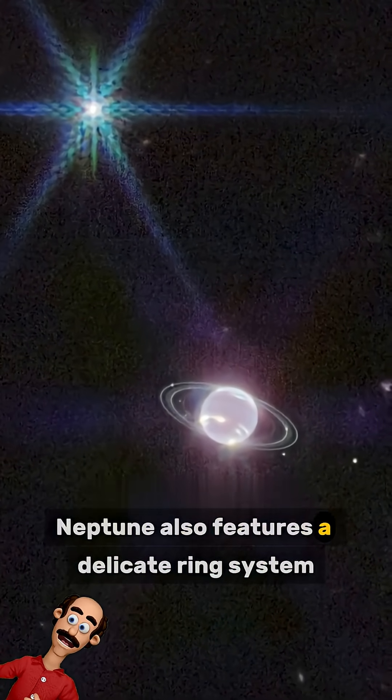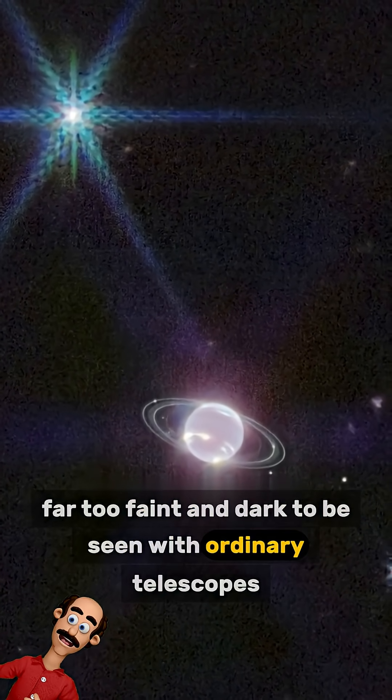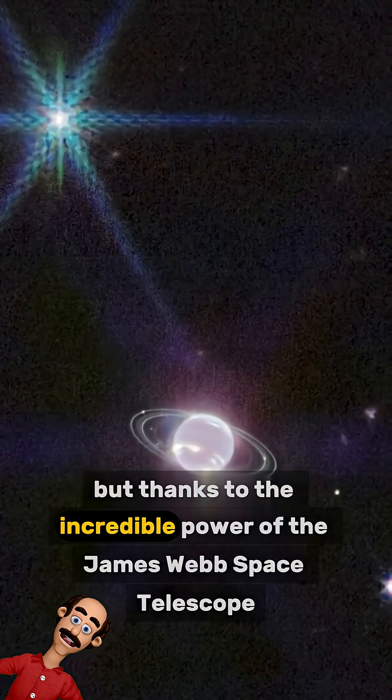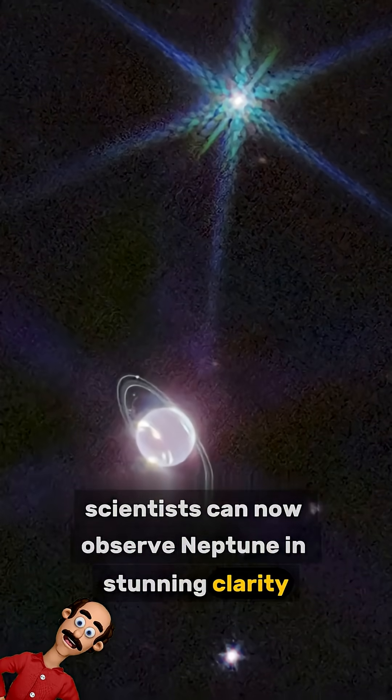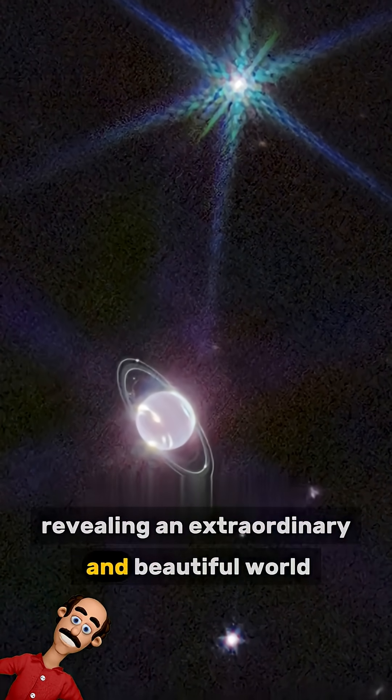Neptune also features a delicate ring system, far too faint and dark to be seen with ordinary telescopes. But thanks to the incredible power of the James Webb Space Telescope, scientists can now observe Neptune in stunning clarity, revealing an extraordinary and beautiful world.